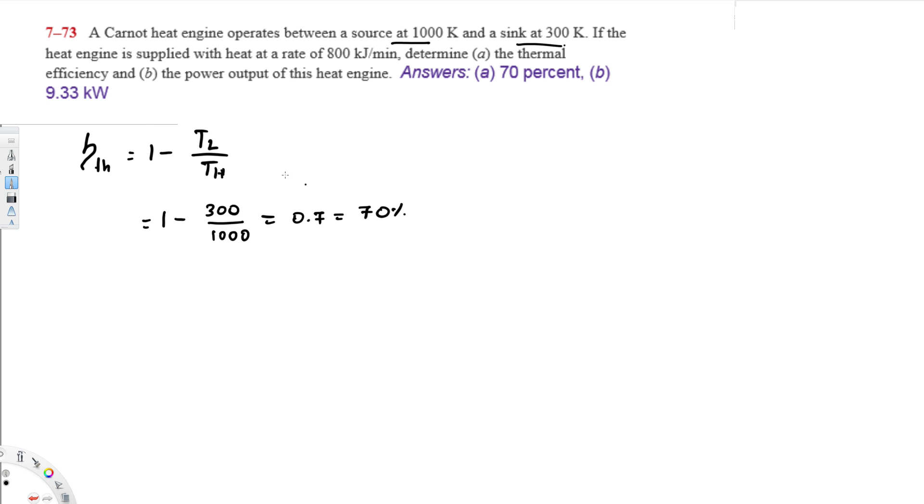The second question is asking: what is the power output of this engine? The power supplied is 800 kilojoules per minute. To calculate the power output, we simply have to multiply the power supply by the thermal efficiency, and that's going to give us the power output.